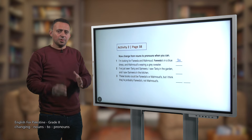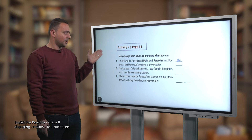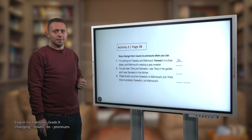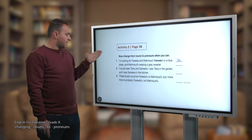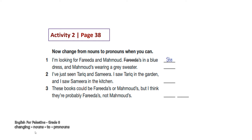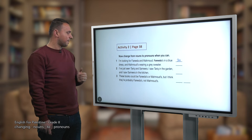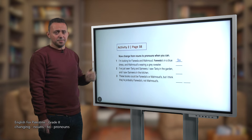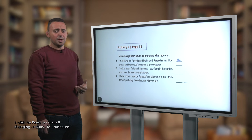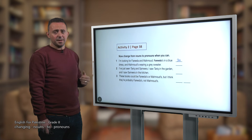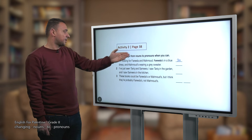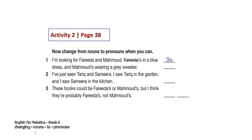Now, dear students, we go to your textbook page 38, activity 2. We are going to change nouns to pronouns. First example: 'I'm looking for Farida and Mahmoud. Farida's in a blue dress and Mahmoud is wearing a gray sweater.' Farida is a subject, so we replace it with 'she'. Mahmoud is also a subject, so we replace it with 'he'. So 'she' refers to Farida and 'he' refers to Mahmoud.